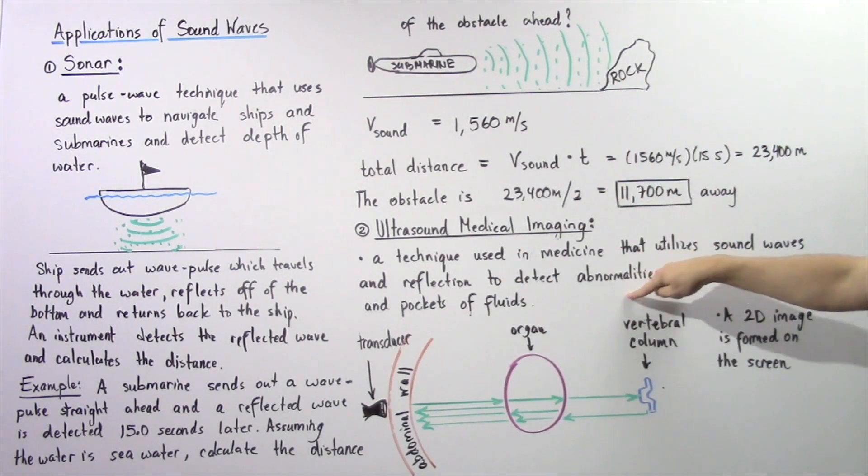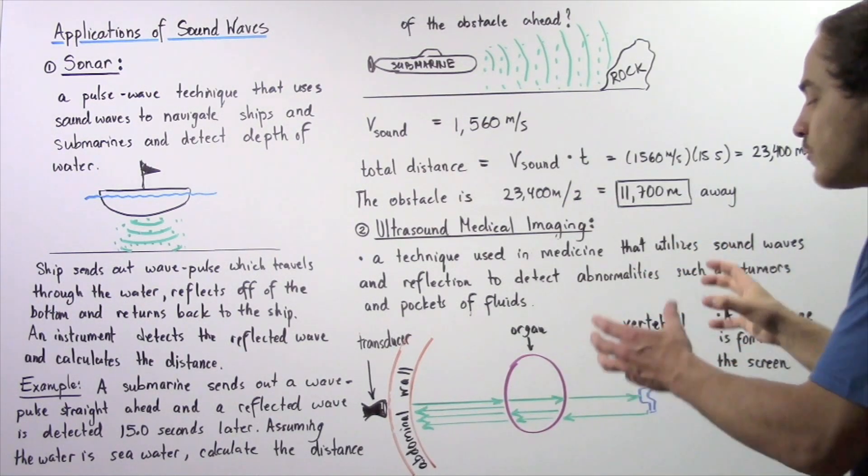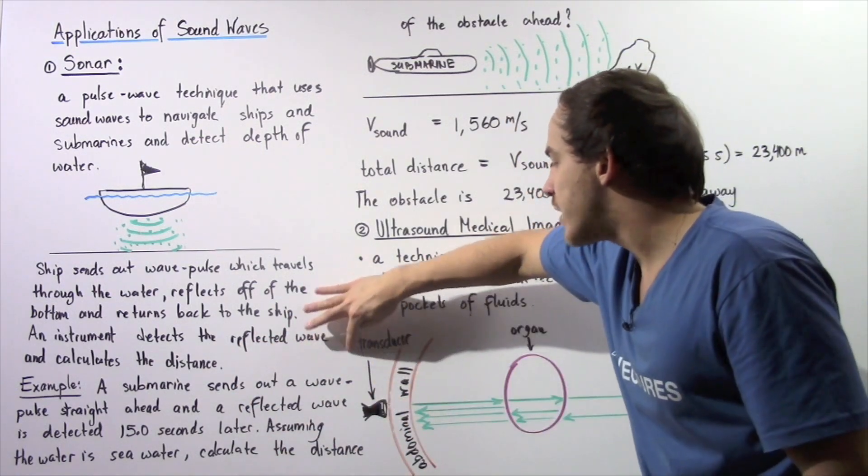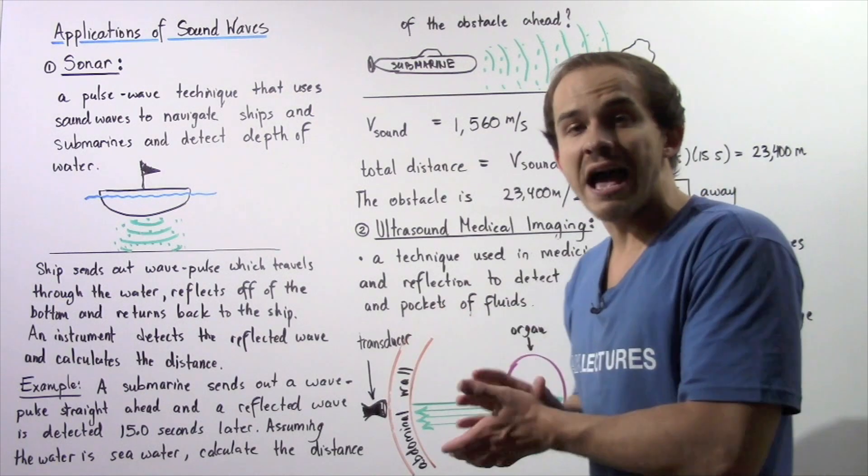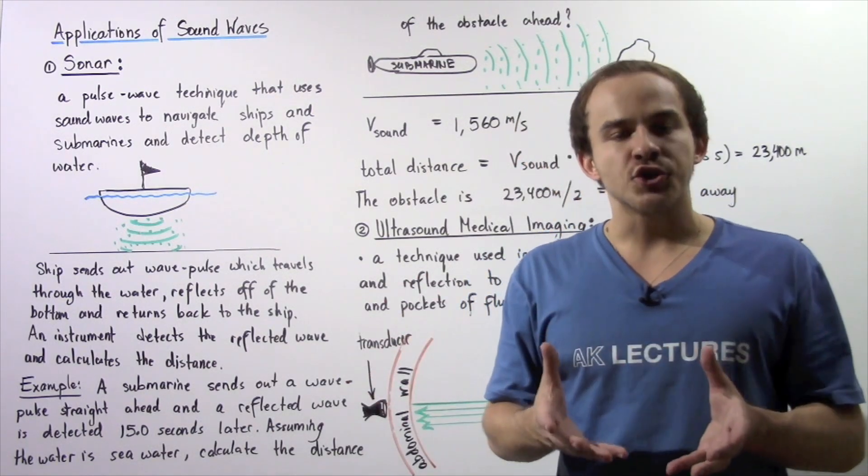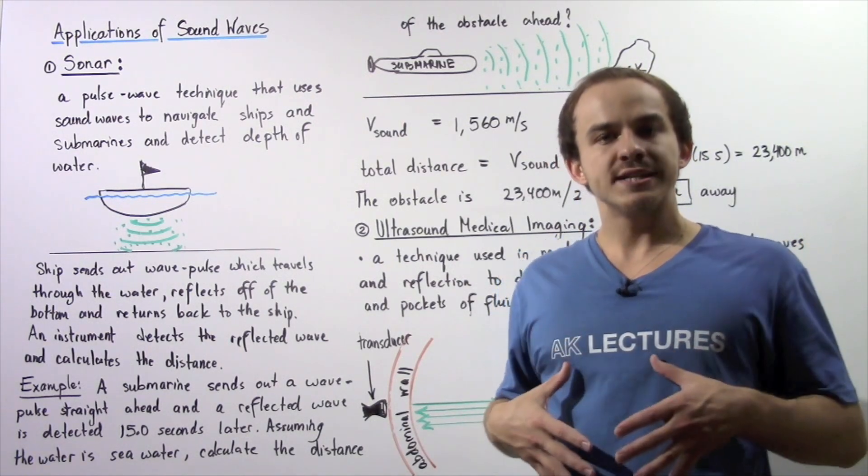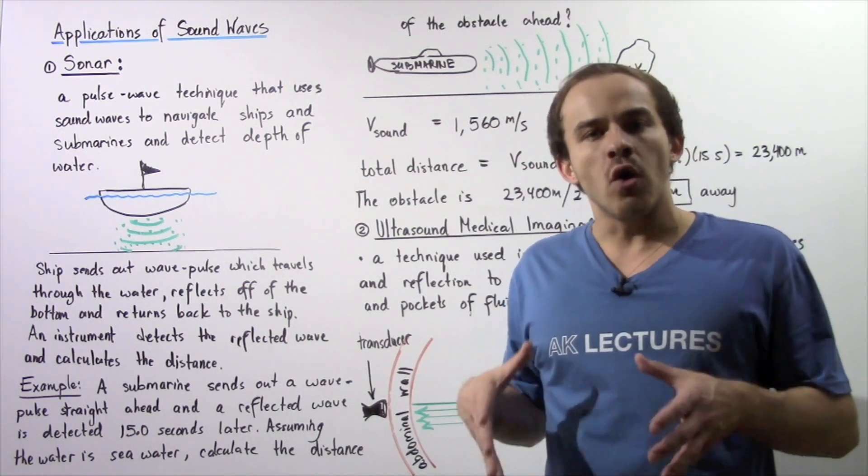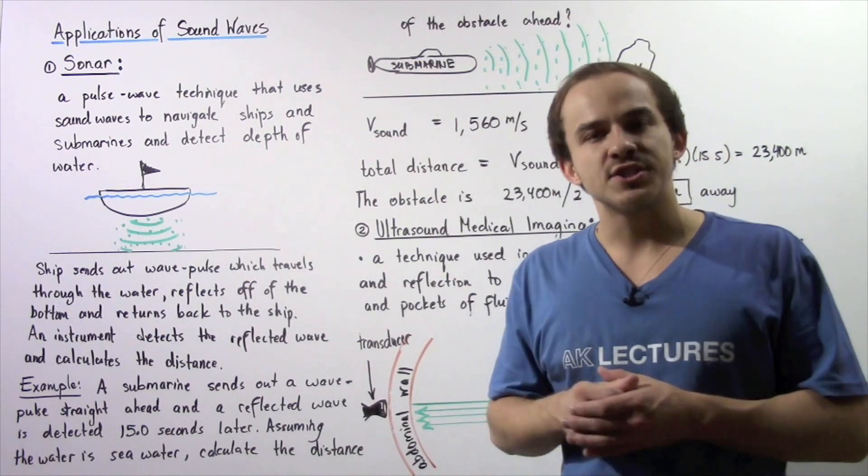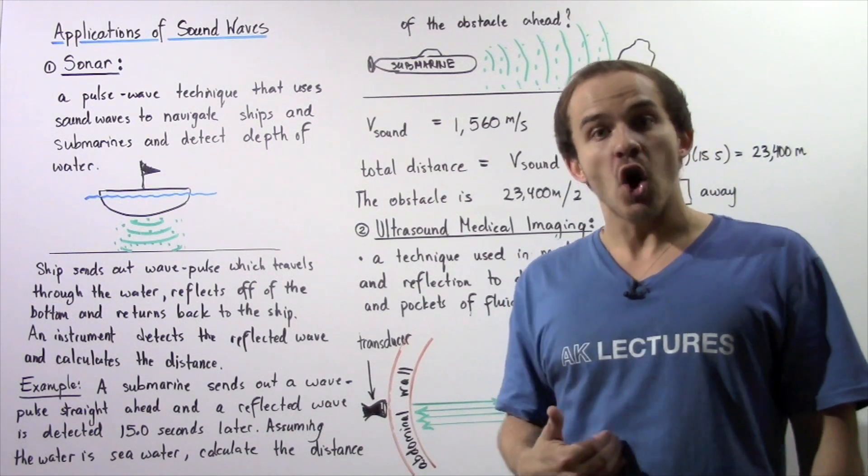In this case, it's the spinal cord. Once our sound wave hits the spinal cord, it reflects and travels back to this instrument. Once the transducer picks up all the sound waves, it creates a two-dimensional image on a monitor or screen. In this way, we can study the way that our organs function inside our body and detect various types of abnormalities such as tumors and pockets of fluid without actually having to open our body and examine the interior.